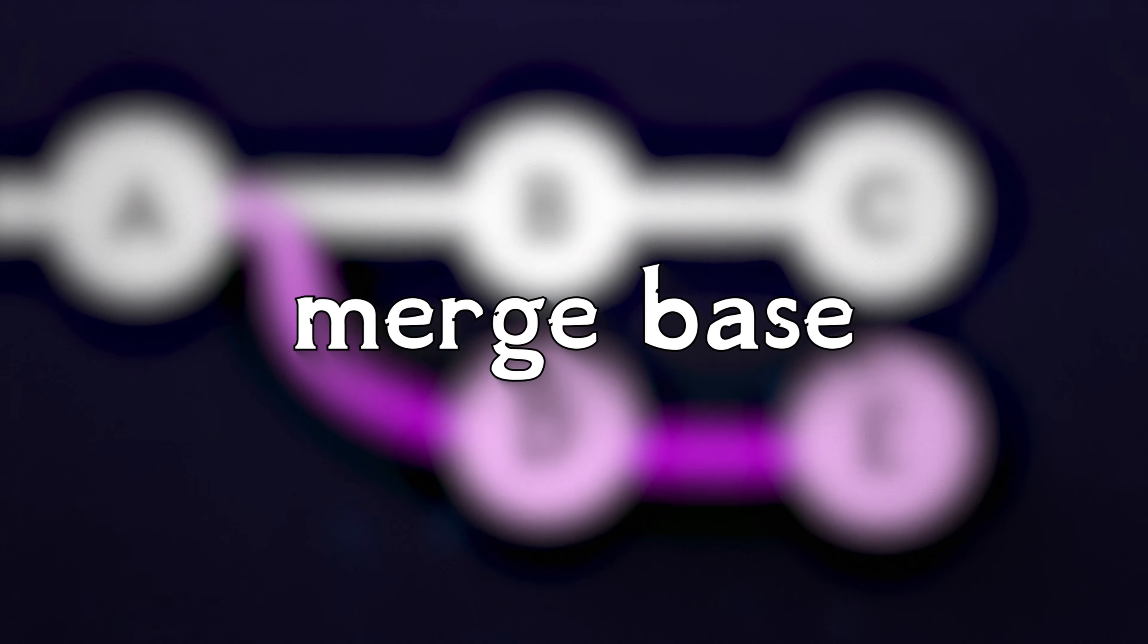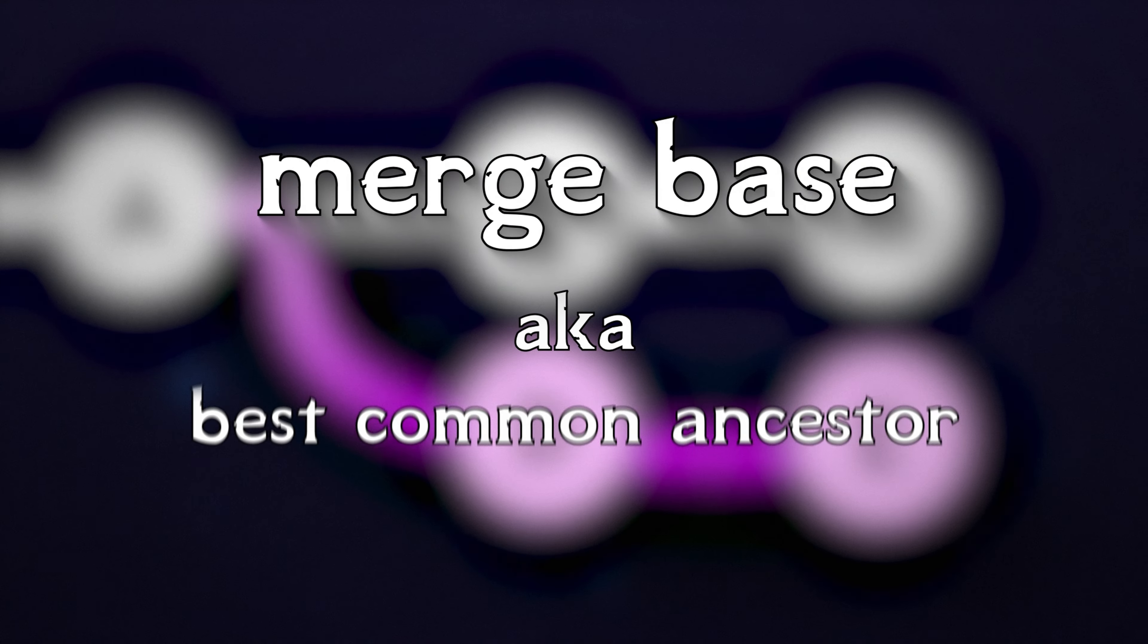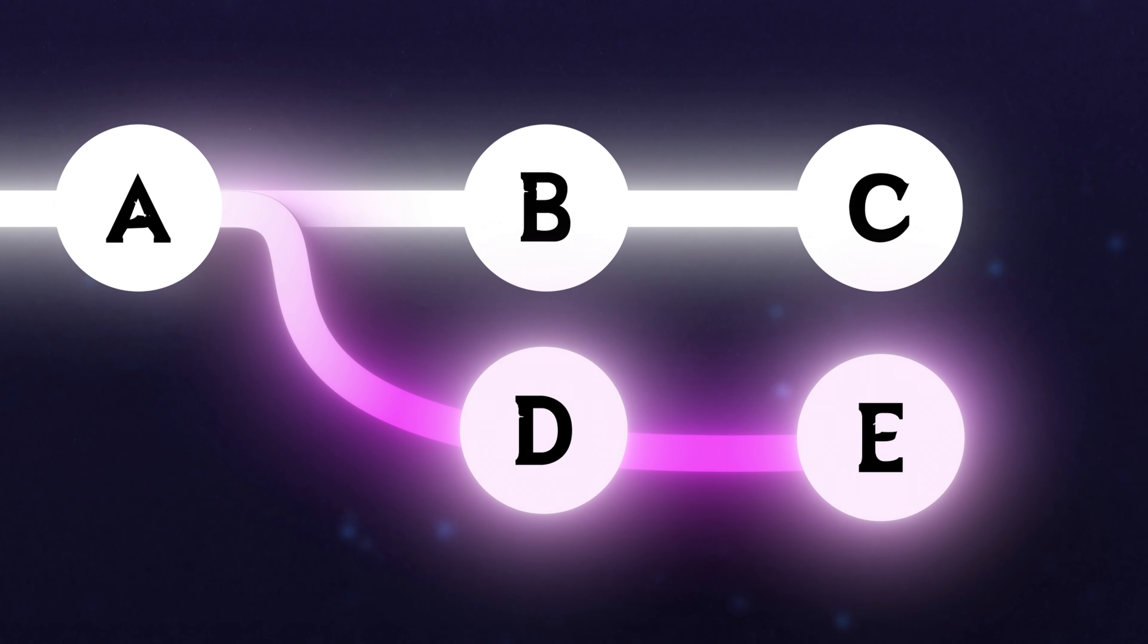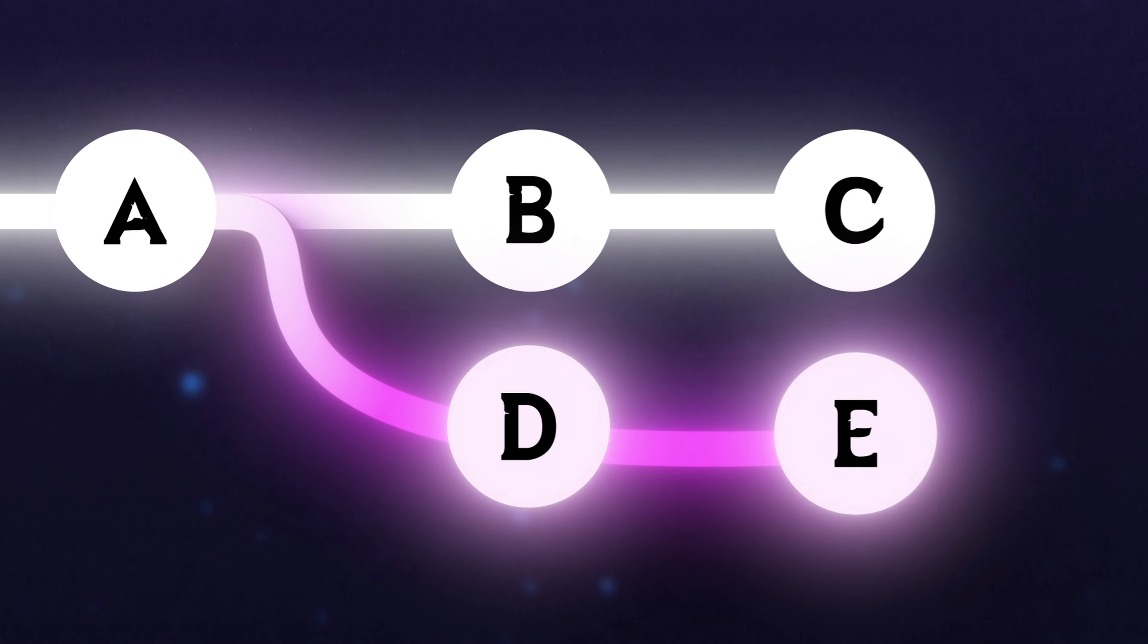And it's the only commit with two parents. The process for a merge commit looks like this. First, we need to find the merge base. The merge base, also called the best common ancestor, is the nearest ancestor that is in common to both branches. And in this case, that would be A.